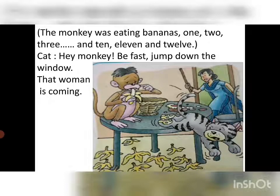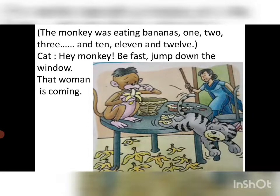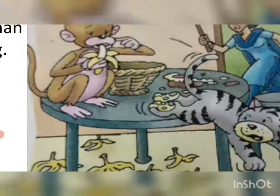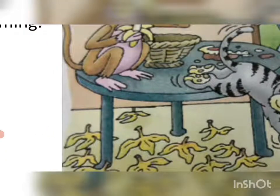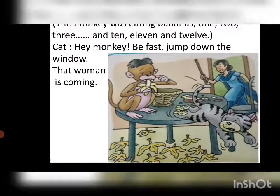The monkey started eating bananas one by one — one, two, three, four, five, ten, eleven, twelve. In this way he ate all the bananas. You can see the peel of the bananas in the picture.